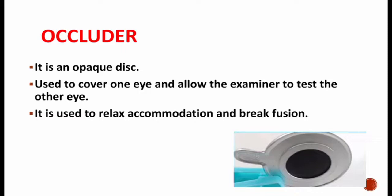For example, if we need to examine the right eye, the left eye should be occluded with the occluder. On placing the occluder in one eye, it breaks the fusion and it helps to relax the accommodation.